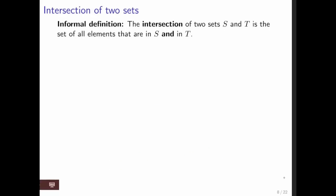The intersection of two sets S and T is the set of elements that are in both S and T and this is denoted by S intersection T. And formally this is defined as all elements x such that x is an element of S and x is an element of T.